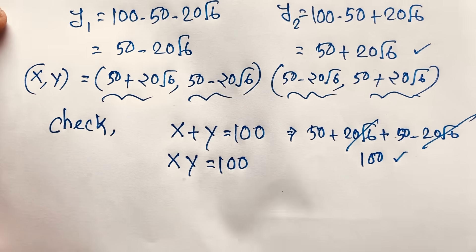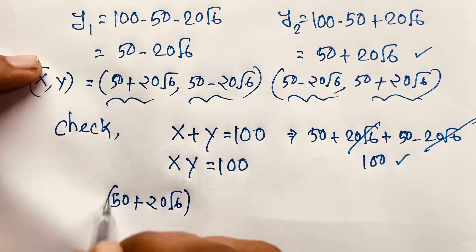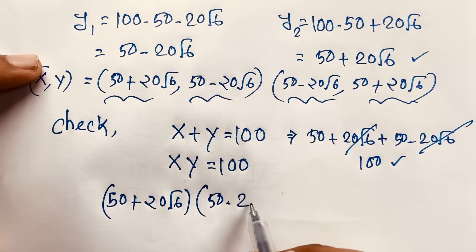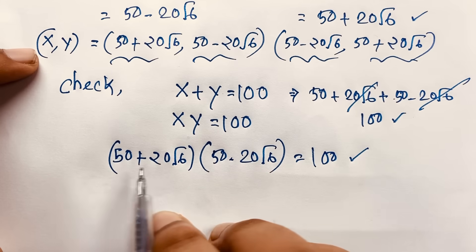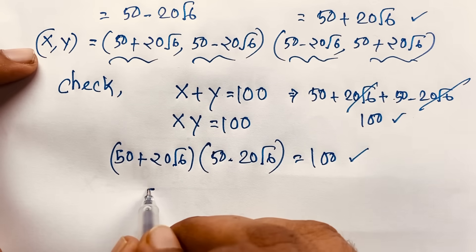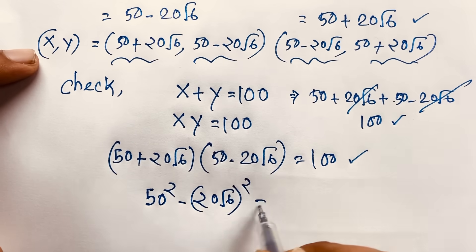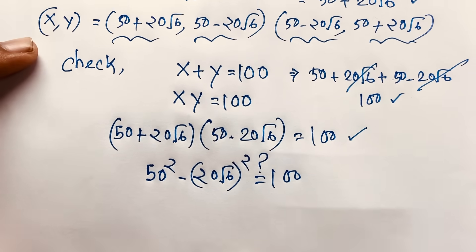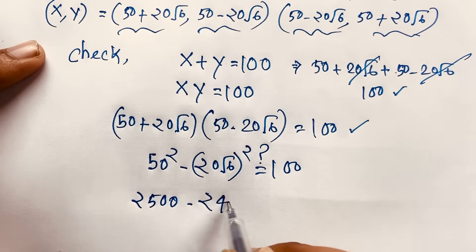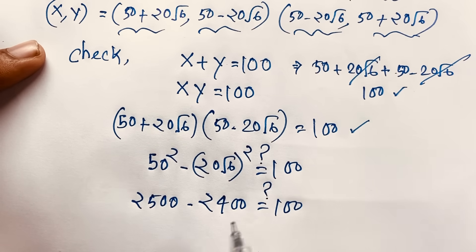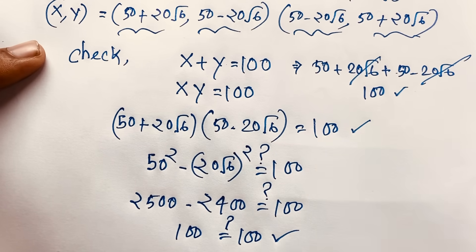Let's verify xy equals 100. x times y is (50 plus 20 square root of 6) times (50 minus 20 square root of 6) equal to 100. This is of the form (a plus b)(a minus b), so it equals a squared minus b squared. That is 50 squared minus (20 square root of 6) squared, which is 2500 minus 2400, equal to 100. So left-hand side and right-hand side are both equal in this German Math Olympiad question.